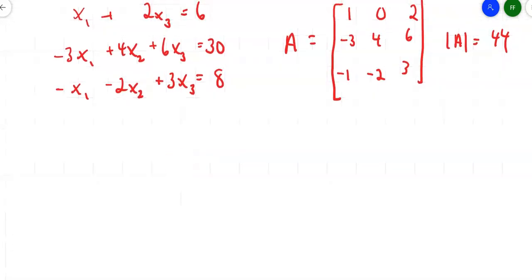Let's form our other three matrices. A sub 1 is going to be replaced the first column with the three numbers at the right-hand side. That's your B. So the 6, the 30, and the 8 go down the first column. Then I keep the 0, 4, negative 2, and the 2, 6, 3.